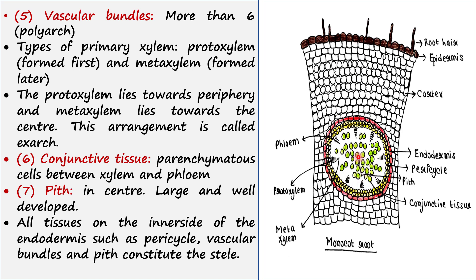Here you can find the pith, which is the central area. The pith is very large and well developed. All tissues on the inner side of the endodermis — that is, the pericycle, the vascular bundles, the conjunctive tissue, and the pith — together constitute the stele.